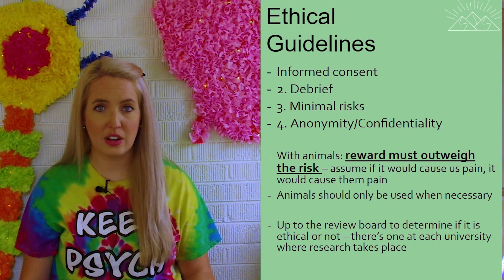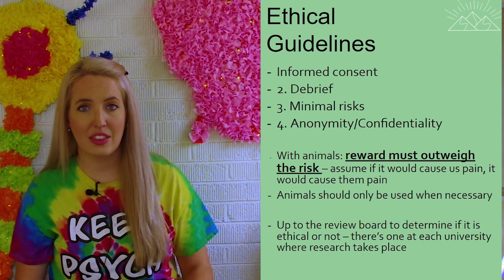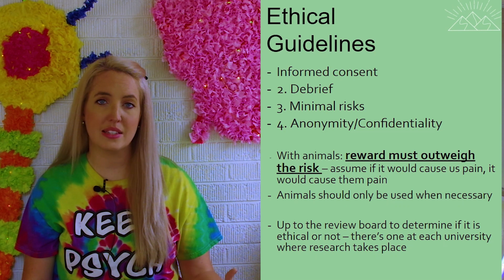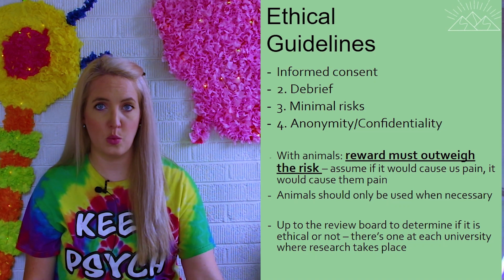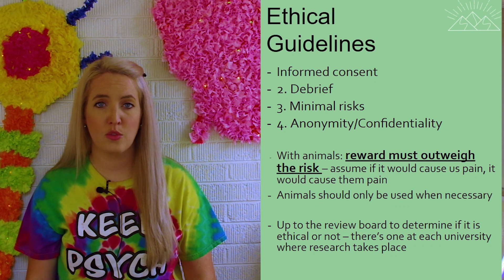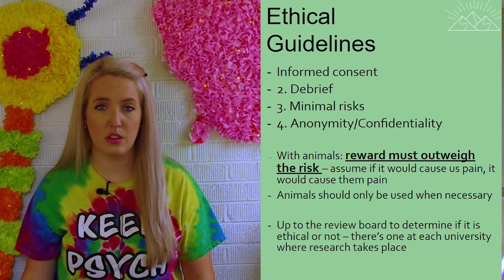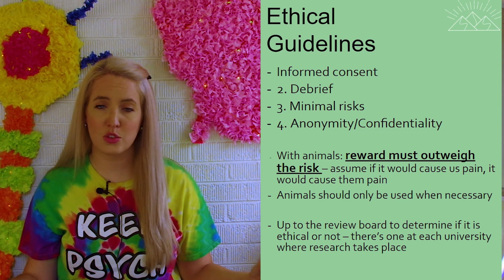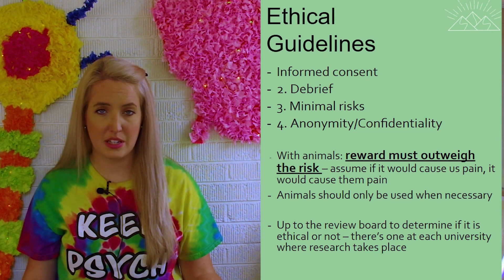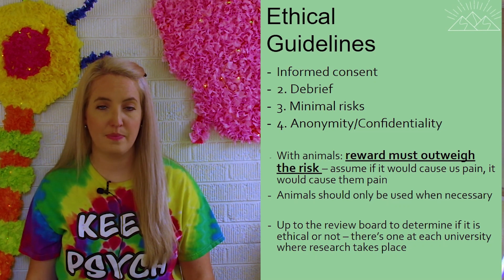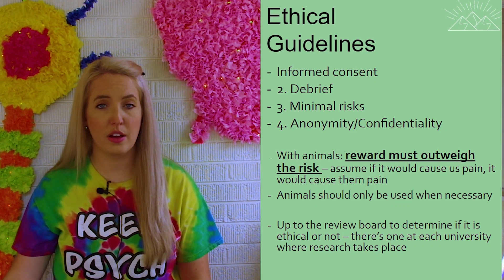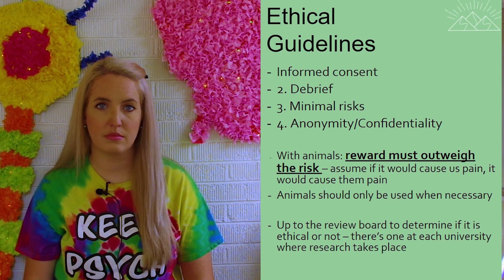When it comes to animals there are some additional guidelines we must follow — again the idea is to minimize risks, but the reward must outweigh the risk, and we have to assume that if something would cause pain to humans it will cause animals pain as well. Animals should only be used when necessary. Whatever the experiment — whether done on a human or an animal — it needs to be approved by an independent review board, or IRB, typically at a major university or other large organization. It's up to each organization to review a proposal of a study and either accept or reject it based on the ethical guidelines.